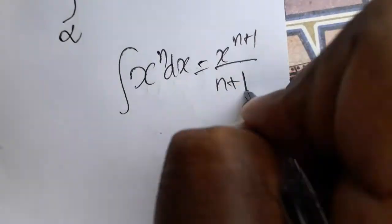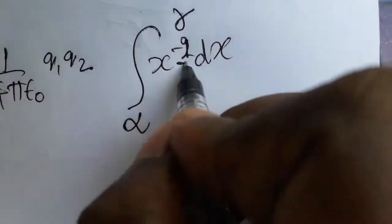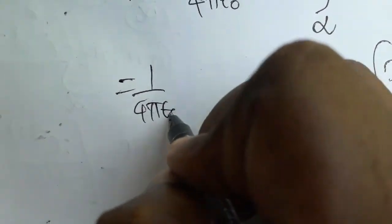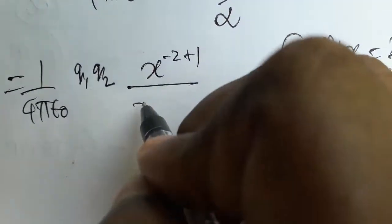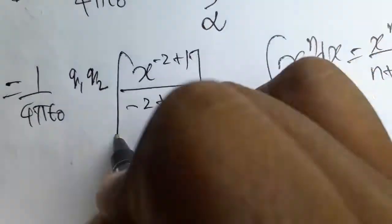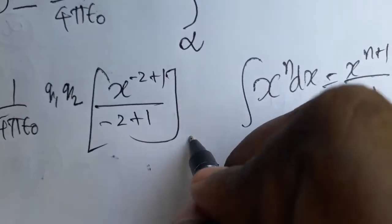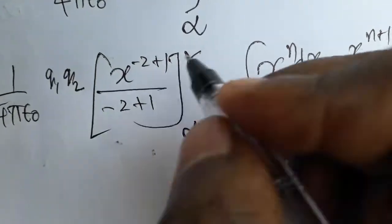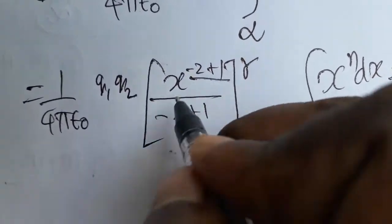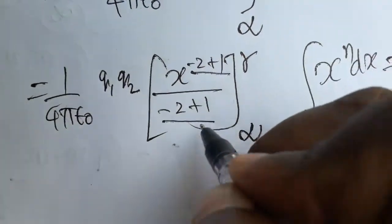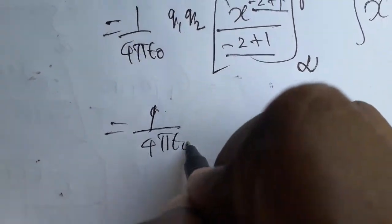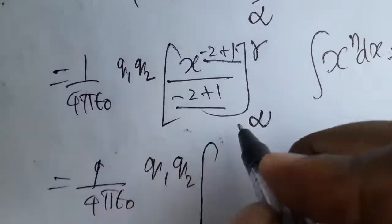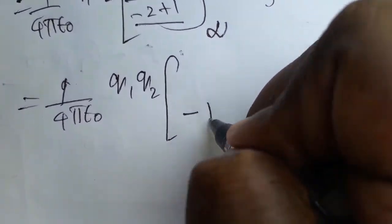The integration formula for x to the n dx is x to the n plus 1 divided by n plus 1. Here n equals minus 2, so we get: 1 over 4 pi epsilon naught times q1 q2, multiplied by x to the minus 2 plus 1 divided by minus 2 plus 1, with limits from infinity to r. Since minus 2 plus 1 equals minus 1, we get x to the minus 1 divided by minus 1.